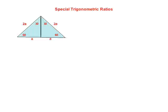Special trigonometric ratios. In the picture we have an equilateral triangle, and all the angles in an equilateral triangle are equal, so they all would be 60 degrees. All the sides would also be equal. So the big blue triangle is equilateral — the sides are all 2a long and the angles are all 60 degrees.